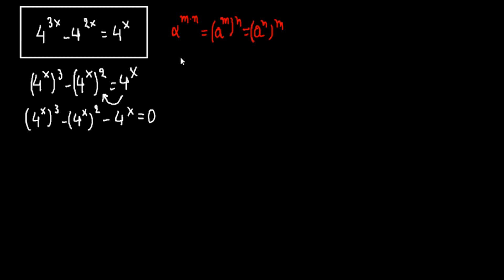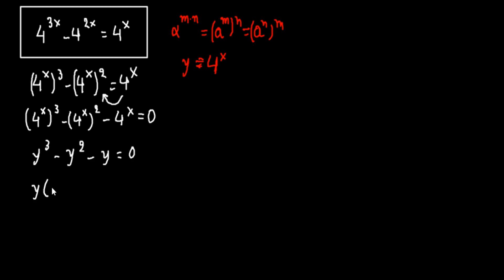Now we take a substitution y equal to 4 raised to the power of x. So this becomes y to the third power minus y to the second power minus y equals to zero. Factoring out y, we get y times y squared minus y minus 1 equals to zero.